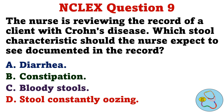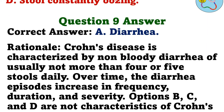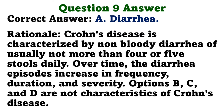Question 9. The nurse is reviewing the record of a client with Crohn's disease. Which stool characteristic should the nurse expect to see documented in the record? A. Diarrhea. B. Constipation. C. Bloody stools. D. Stool constantly oozing. The correct answer is A, diarrhea. Rationale: Crohn's disease is characterized by non-bloody diarrhea of usually not more than 4 or 5 stools daily. Over time, the diarrhea episodes increase in frequency, duration, and severity. Options B, C, and D are not characteristics of Crohn's disease.